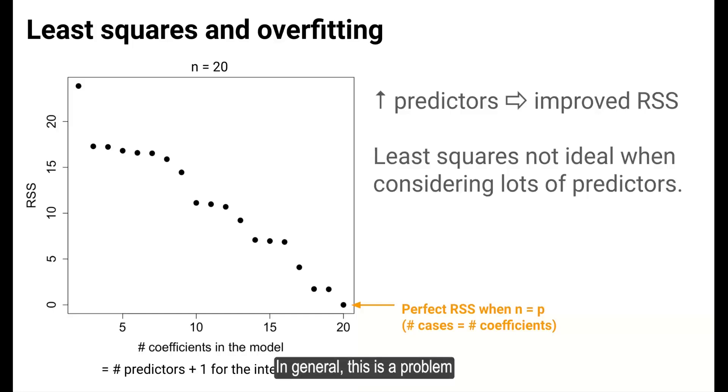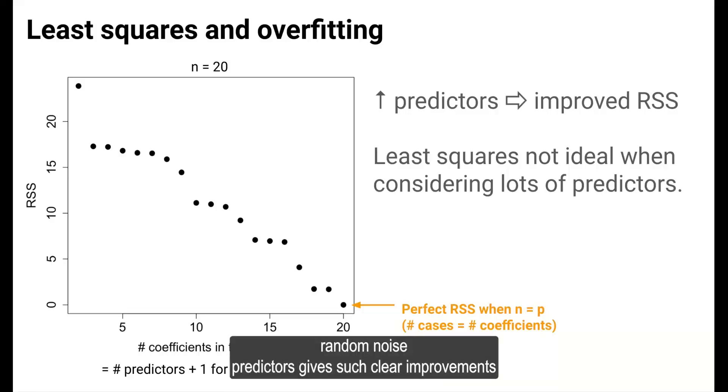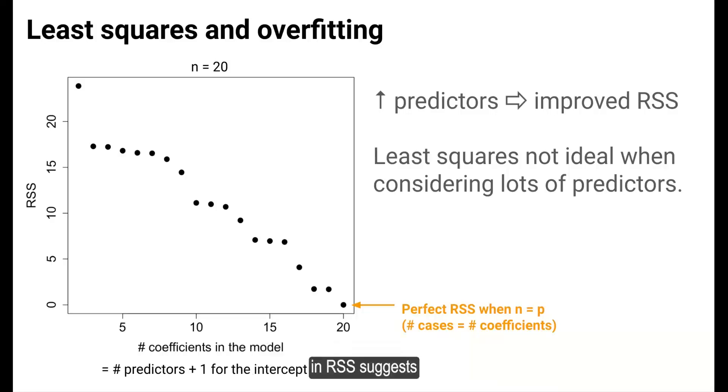In general, this is a problem for the least squares approach. Including more predictors automatically improves the sum of squared residuals metric. In this example, the predictors were just random noise, and the fact that adding random noise predictors gives such clear improvements in RSS suggests that the least squares criterion is not ideal when there are lots of predictors being considered.